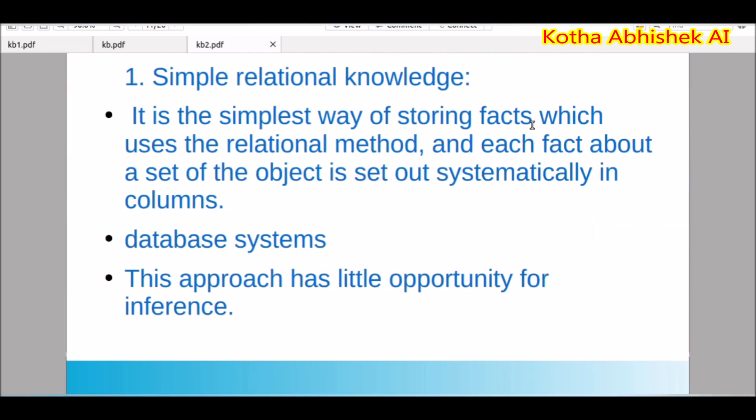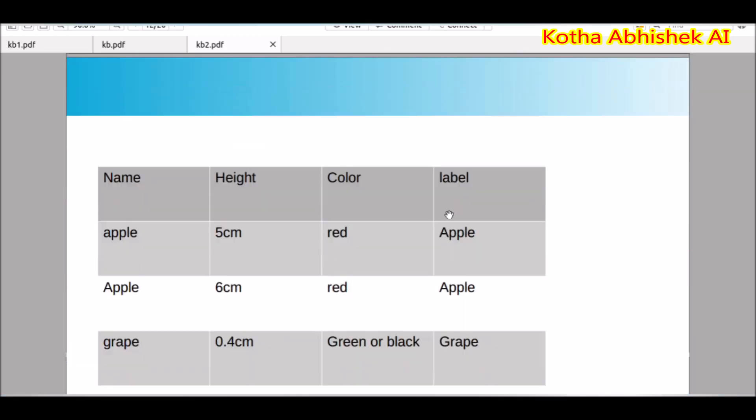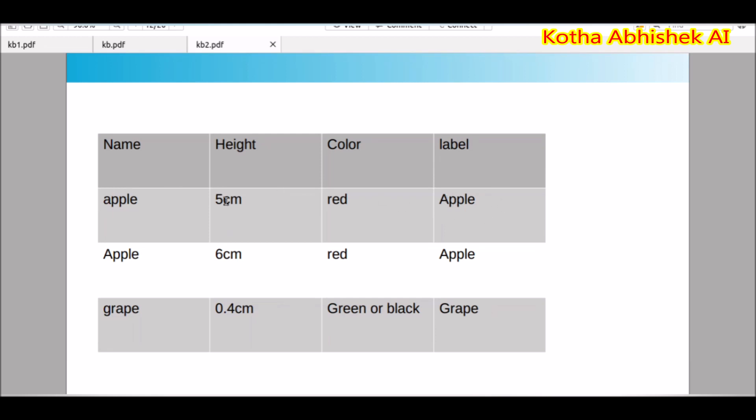It is the simplest way of storing facts which uses relational method. Each fact about a set of objects is set out systematically in columns. The information is in rows, systematically arranged. When you choose the database, like apple with height 5 cm and color red, the result will be apple. If you have a query that which fruit is 5 cm and red color, the result will be apple and grape.